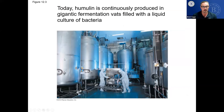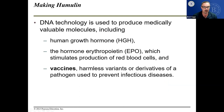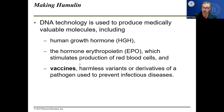This shows bacteria growing in huge vats, and a system extracting the material the bacteria produce. DNA technology is also used to produce medically valuable molecules including human growth hormone (HGH), EPO which stimulates red blood cell production — you could use EPO to blood dope, which is illegal and immoral — and vaccines. One of the ways we get vaccines is through genetically modified organisms producing the vaccine in large quantities, for example for COVID.